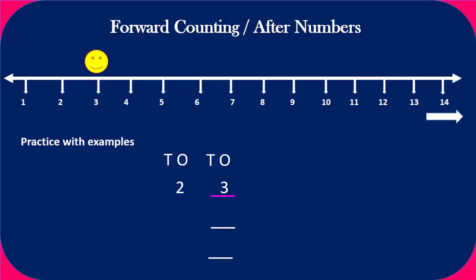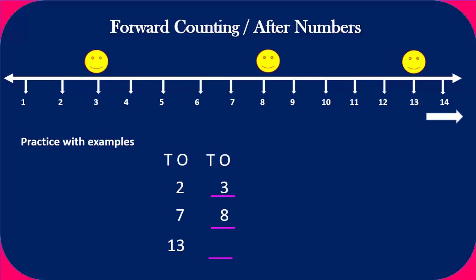Let's take another example. Seven — there is a blank space after seven, so the number after seven is eight. Let's try one more example. Number thirteen — there is a blank space after number thirteen, so we have to go one number forward, that is number fourteen.